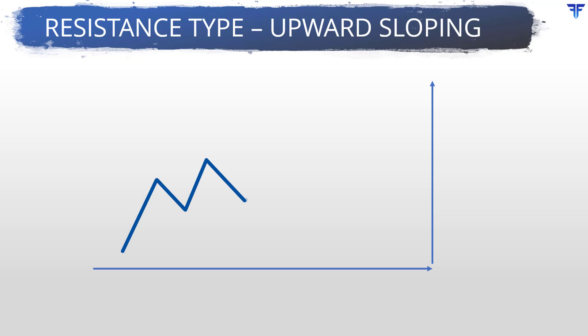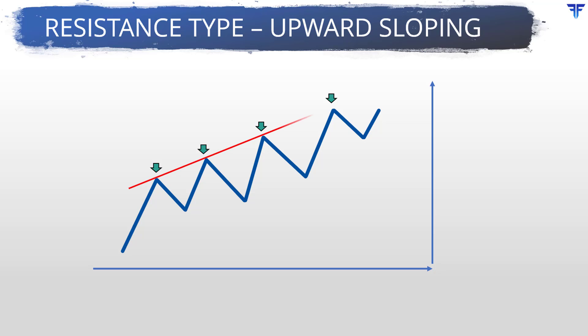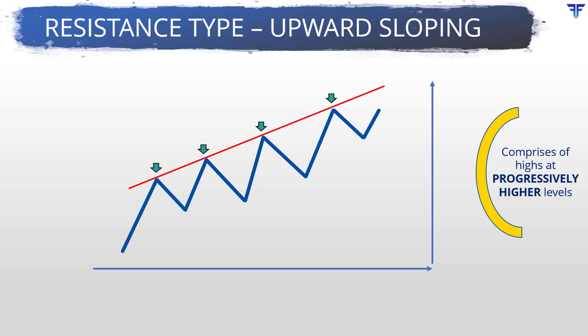Finally, let us now look at the third type of resistance — the one that is rising upwards to the right. Look at this chart here. If you closely observe the unfolding pattern, you will see that the highs are being made at progressively higher levels. That is, the second high is above the first high, the third high is above the second high, and the fourth high is above the third high. As a result, if the highs are connected using a line, you will notice a line that is rising to the right. So, a rising resistance occurs when two or more highs are concentrated at progressively higher levels.